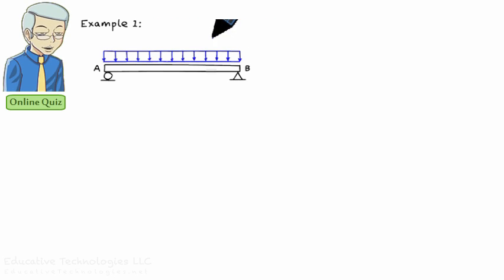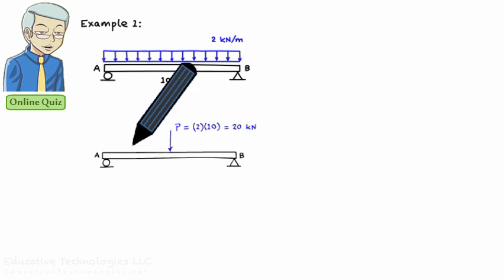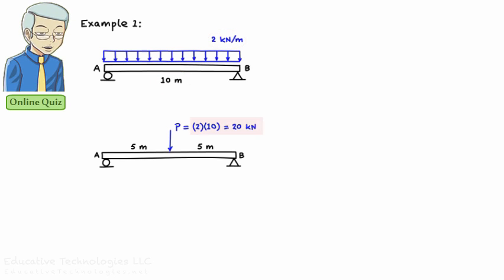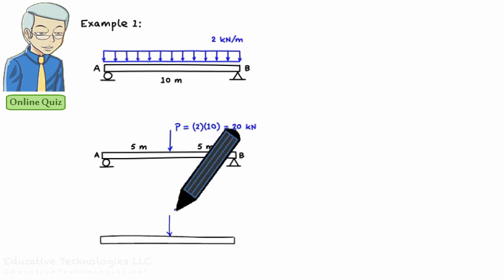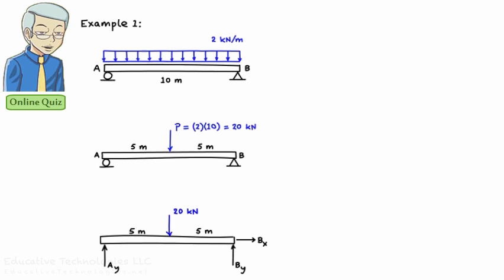Example 1: A beam is subjected to a uniformly distributed load of 2 kN per meter. What are the support reactions? The beam is 10 meters long. First, let's replace the distributed load with a concentrated load. The magnitude of the equivalent concentrated load equals the area of the rectangle: base of 10 times height of 2, giving 20 kN. The equivalent concentrated load is placed at the center of the rectangle, 5 meters from the left end. The support reactions are then found using the free body diagram and the equilibrium equations.